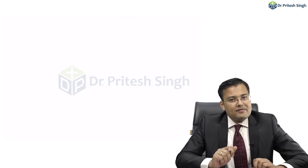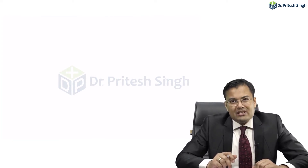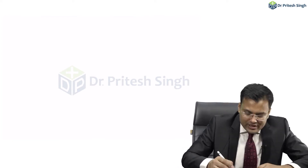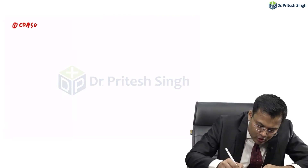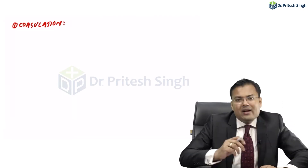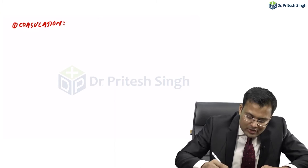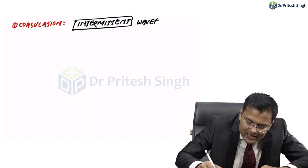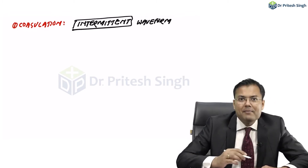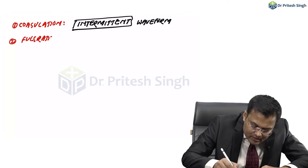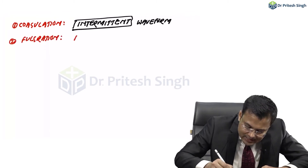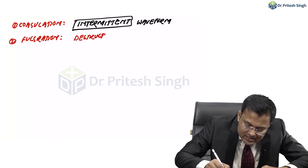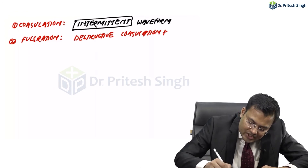What are the effects of diathermy? There can be cutting, coagulation, and fulguration. In coagulation, the cautery is activated with an intermittent waveform. Fulguration involves destructive coagulation with charring.